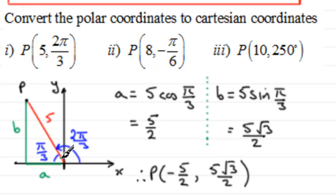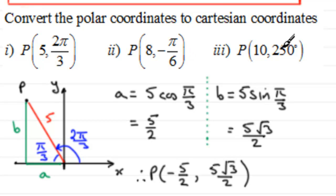That's how I approach a problem like this. Now for the next two examples: the second one is P with polar coordinates 8 and −π/6 radians, and the third one is in degrees — P with coordinates 10 and 250 degrees.